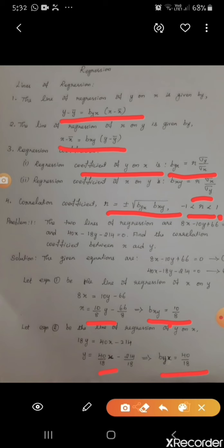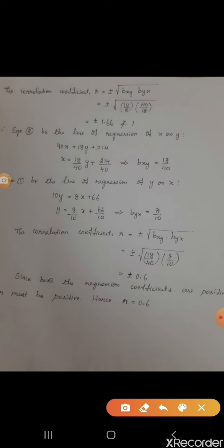Now we calculate the correlation coefficient r using the formula r equal to plus or minus square root of b_xy into b_yx. Substituting the values, we get r equal to 1.66, which is greater than 1 — that is not at all possible. So what we assumed for equations 1 and 2 is not correct, and we need to interchange the assignments.